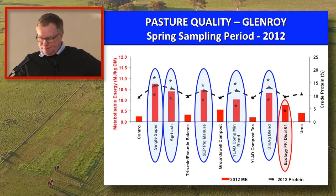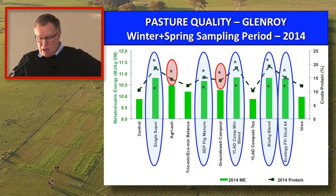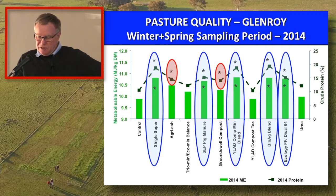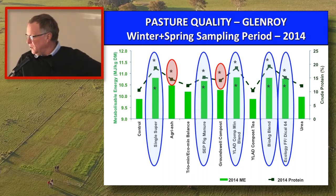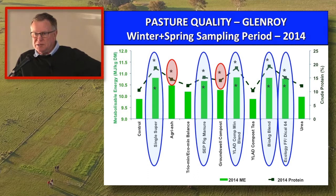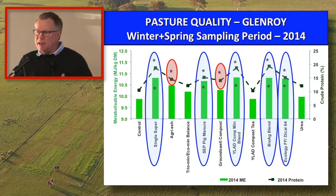Now flicking over to 2014 — energy is this time in green, protein is still in black. Again, we've got five products that were significant for both, and two products that were just significant for compost. One thing to note between 2012 and 2014: the Agriash was significant for both in 2012, but it's only gone over the line for one in 2014. The simple fact was Agriash had run its course. It was put out once, did a great job for five years, but getting into the sixth year it started to lose some impact.